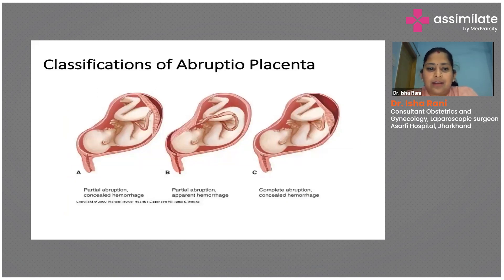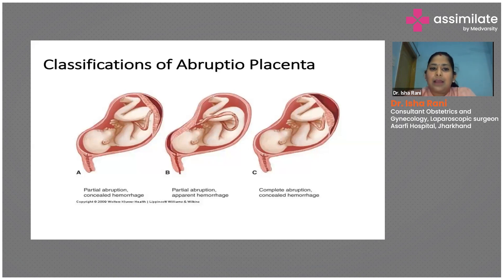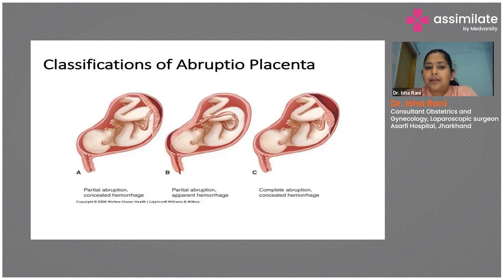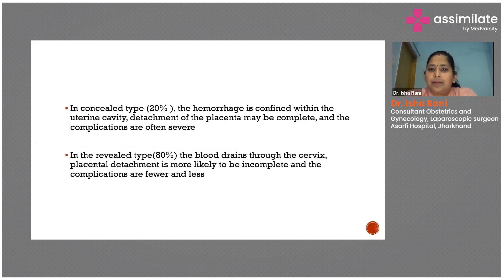As you can see in this diagram, the first type shows that placental separation has happened but bleeding is not occurring because the membranes have not separated. In the second type, also called marginal abruption, the margin of the placenta has separated and blood trickles down per vagina. In the concealed type, the hemorrhage is confined within the uterine cavity, detachment of the placenta can be complete, and it is often very severe.